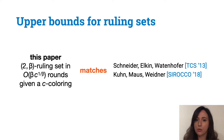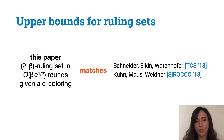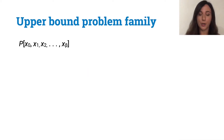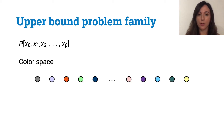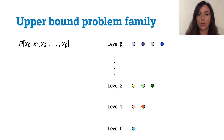In particular, what we do is show an upper bound for ruling sets as a function of a given input coloring. More precisely, we show that given a c-coloring, we can obtain a 2-beta ruling set in order of beta times c to the power of 1 over beta rounds. A problem in our family has beta plus 1 parameters, x0, x1, up to x_beta. These problems are characterized by a coloring component from some color space. Each color has a level from 0 to beta, and these parameters x0 through x_beta determine how many colors we have for each level: x0 colors in level 0, x1 colors in level 1, and so on.